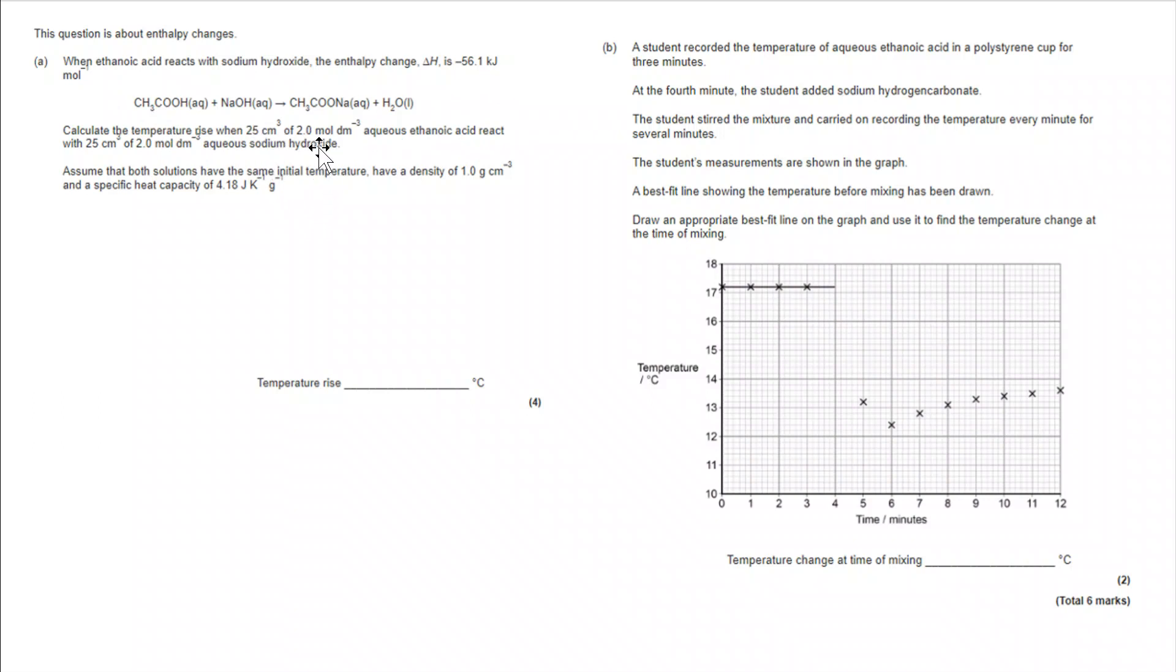We are told that there is an enthalpy change of negative 56.1 kilojoules per mole. We've also got volume and concentration of ethanoic acid, volume and concentration of sodium hydroxide. Assuming they both have the same initial temperature and a density of 1 gram per centimetre cubed and a specific heat capacity of 4.18 joules per kelvin per gram, we need to work out the temperature rise in this circumstance.